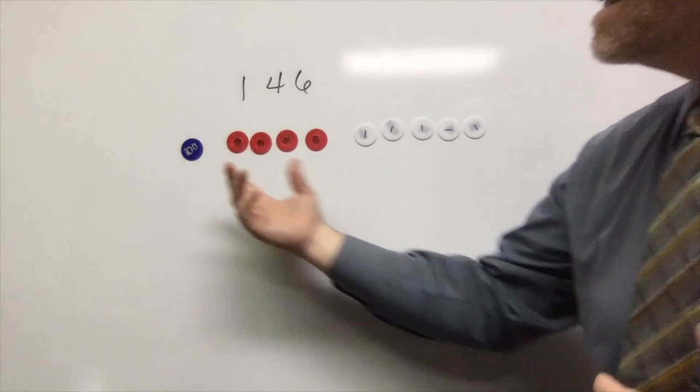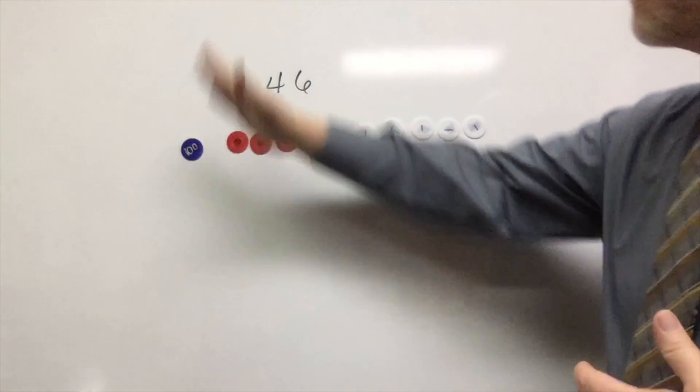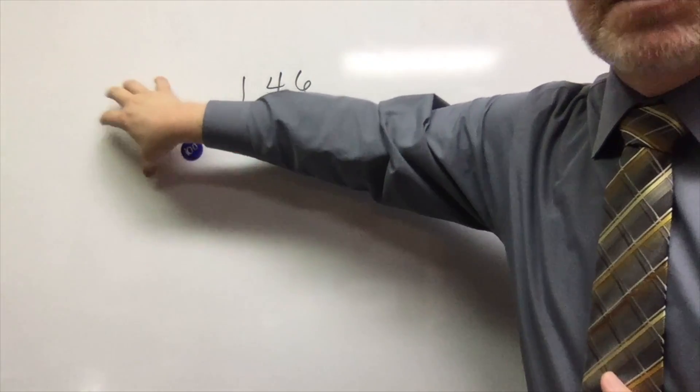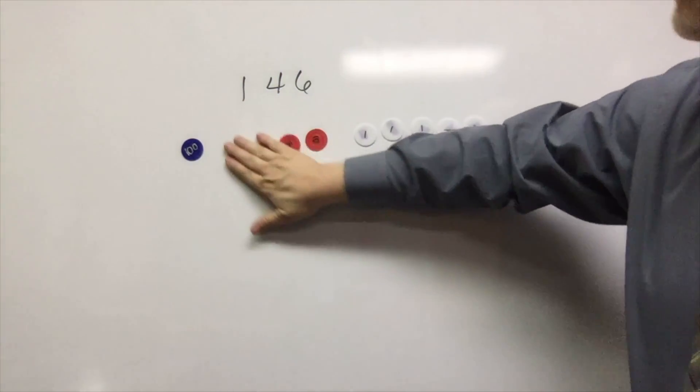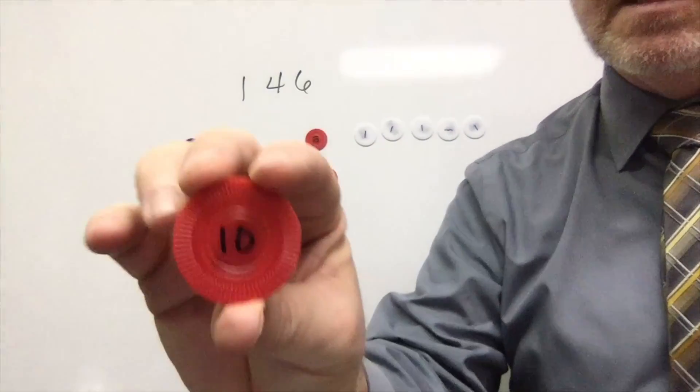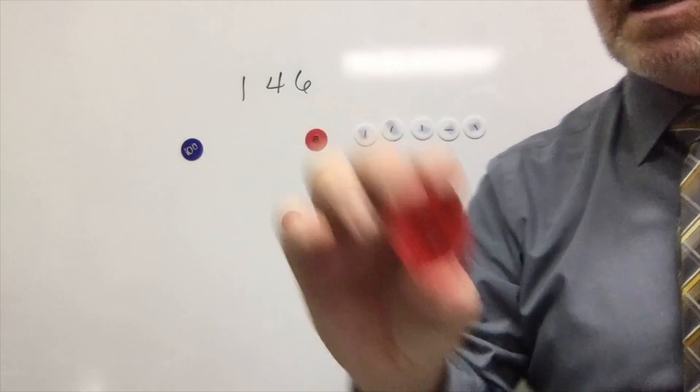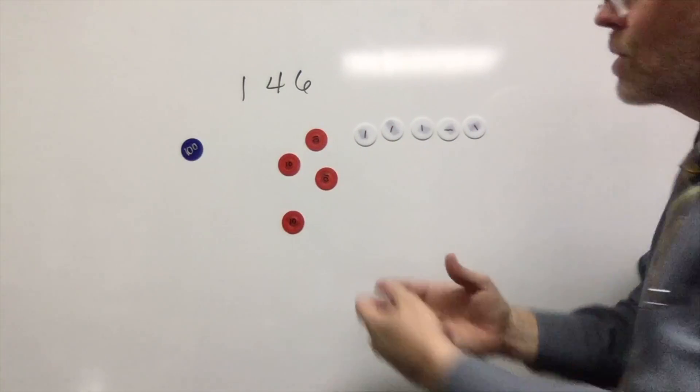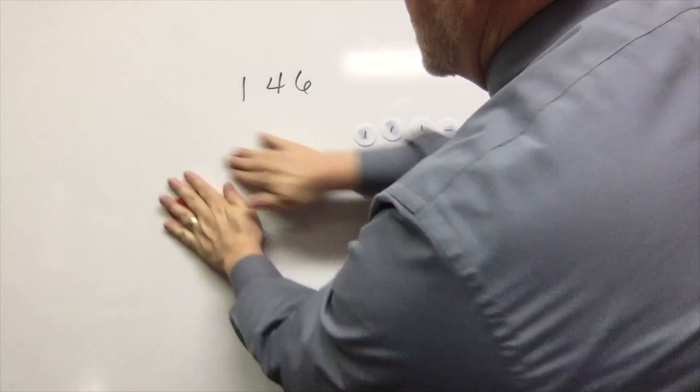Now the idea of this being a place value disk is I'm not putting in the beautiful tables with labels that say hundreds, tens, and ones. I'm letting the color and the symbol on it represent or indicate what place value we're dealing with.